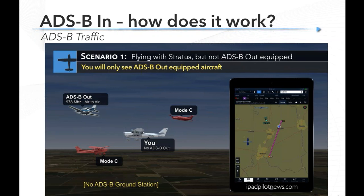Let's look at three scenarios. Scenario one: we're flying in a 172 with a Stratus portable ADS-B receiver but no ADS-B out, and there's no ground station. The only traffic we'll see is air-to-air traffic from the Baron because he has ADS-B out. We won't see the other two aircraft in red because they don't have ADS-B out and there's no ground station to fill in the gaps.